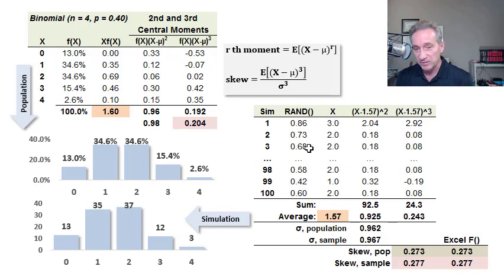And as before, I've hidden most of the rows here, 1 to 3, skipping 4 to 97, then the rest. So here we have a simulation, 100 random Xs drawn from this binomial.